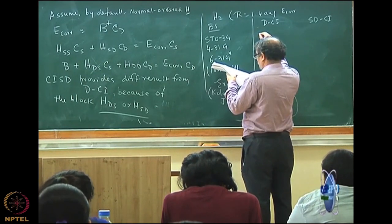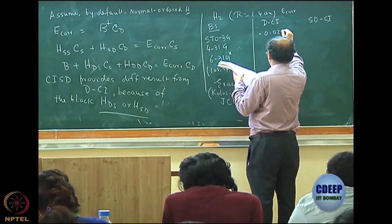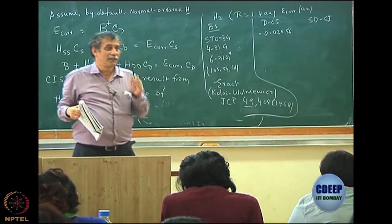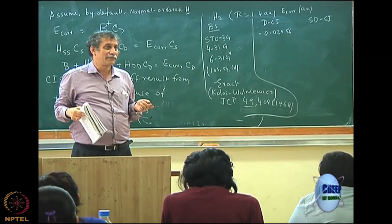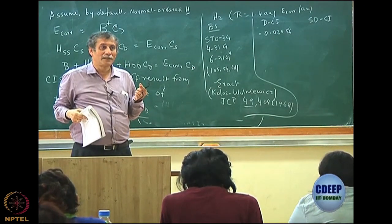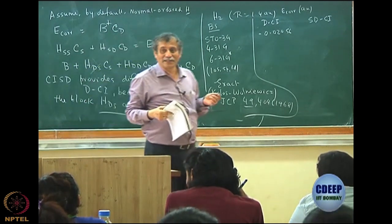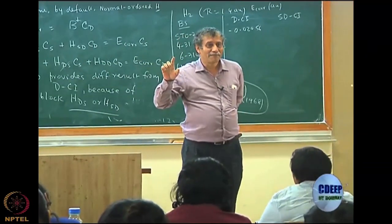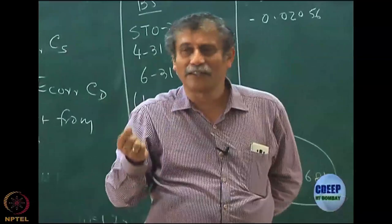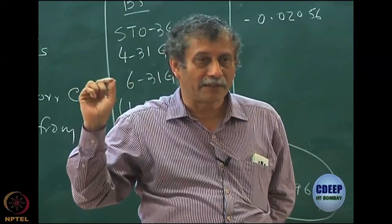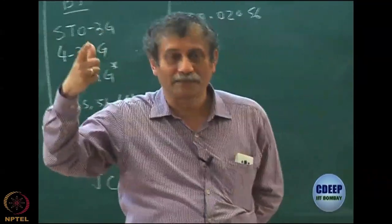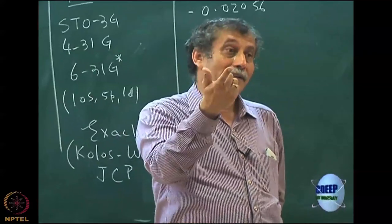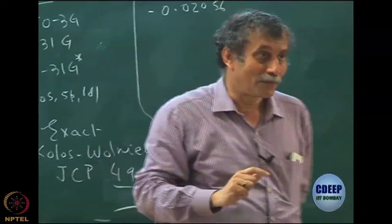For DCI, the correlation energy is −0.02056 atomic units. All units here are atomic units — one Hartree is 27.2116 eV. Half a Hartree is about 13.65 eV for the hydrogen ionization. One electron volt is about 23 point something kilocalories, so one atomic unit is around 627 kcal/mol, and one kilocalorie is about 4.16 kilojoules.